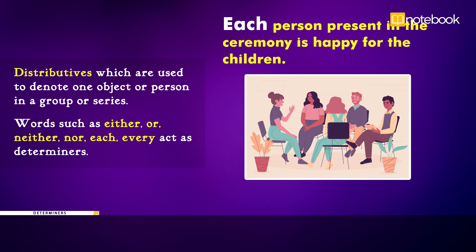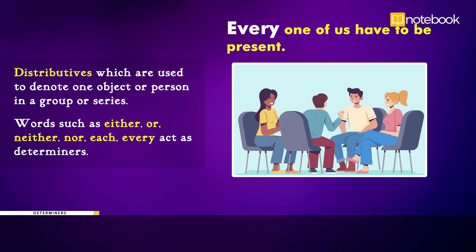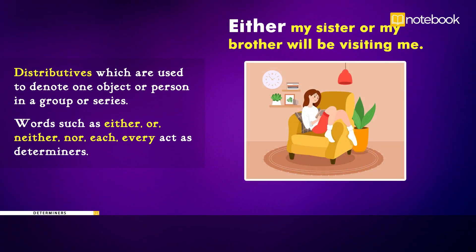Lastly, we have the distributives, which are used to denote one object or person in a group or series. Words such as either, neither, nor, each, every act as determiners. Examples: Each person present in the ceremony is happy for the children. Every one of us has to be present. Either my sister or my brother will be visiting me.